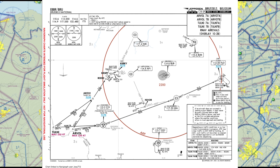Something else you can see on this chart are holding patterns. These are used whenever there's a lot of traffic at an airport and some aircraft have to wait before they can land — in that case ATC will put them in one of these holding patterns. They might give you a specific instruction on how you should approach the waypoint where you will enter a holding pattern, but if they don't, you are expected to use the predetermined heading and altitude noted on this chart. For example, at the Kirky waypoint the inbound heading is 100 degrees and you should hold there between 4,000 feet and flight level 90, unless ATC tells you something else.